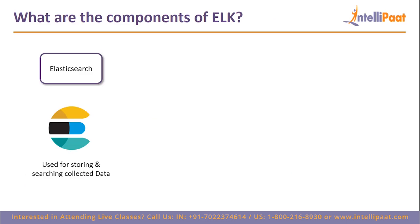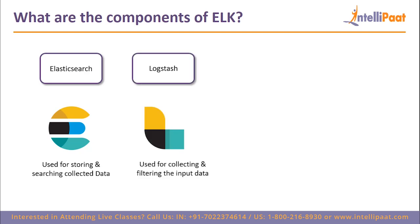The first component is Elasticsearch — used for storing and searching collected data. The second is Logstash — used for collecting and filtering input data. You use Logstash to collect all the raw data, filter it, and then send it to Elasticsearch where the filtered data is stored and indexed.